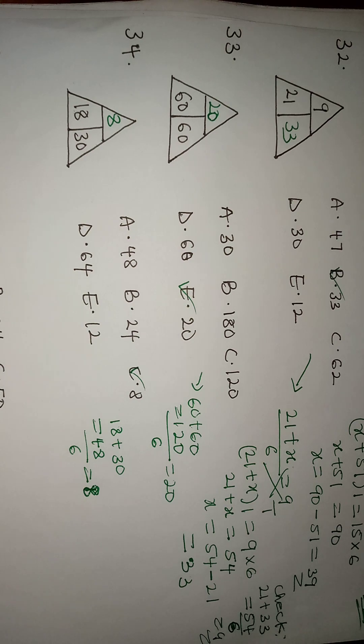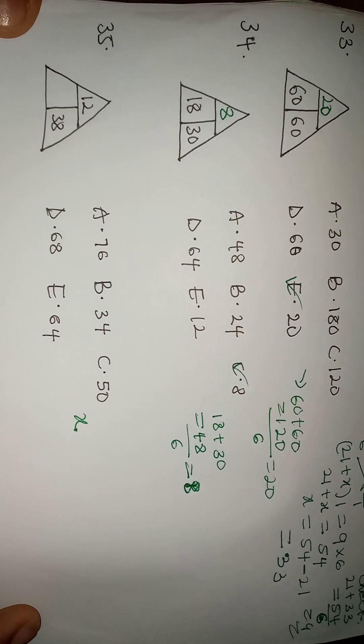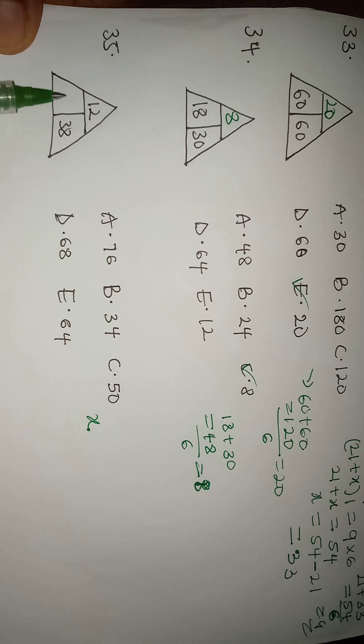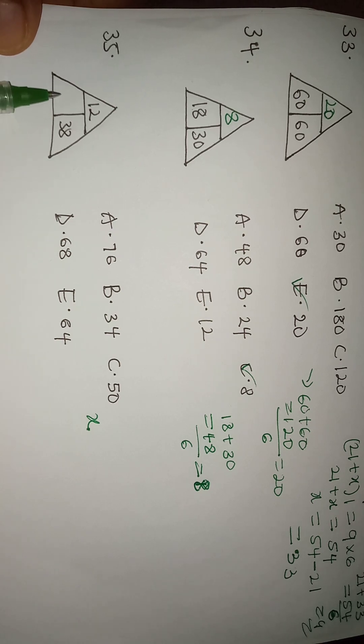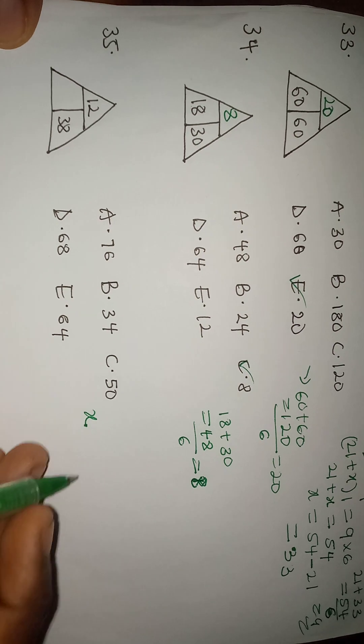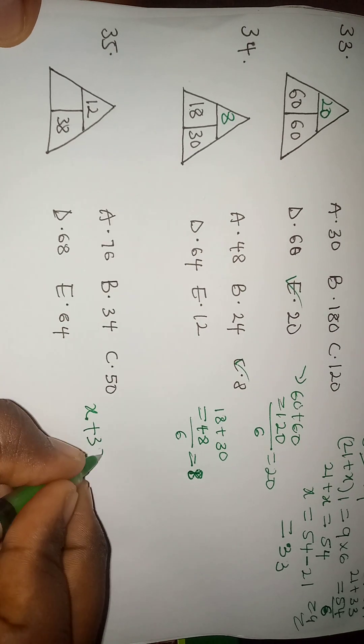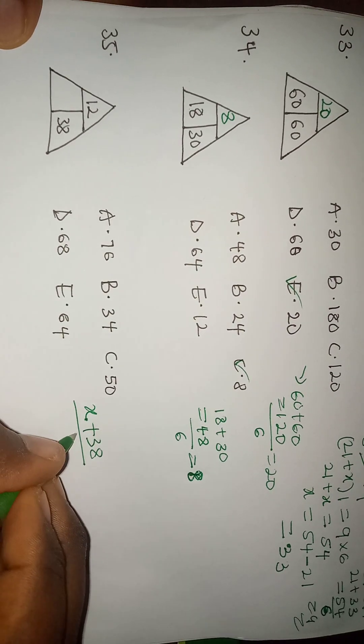So I'm going to say X, I'm assuming it's X. This is X which is X plus 38 over 12. I'm sorry, X plus 68 divided by 6.